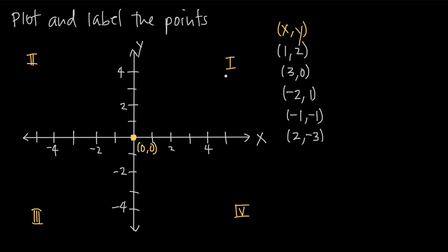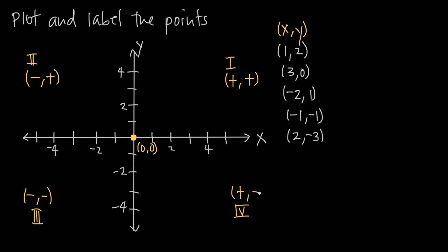In the first quadrant, all coordinate points have a positive x value and a positive y value, because this is the positive direction of both axes. Over here in the second quadrant, we have negative x values and positive y values. Down in the third quadrant, we have negative x and negative y values. And in the fourth quadrant, we have positive x values and negative y values.